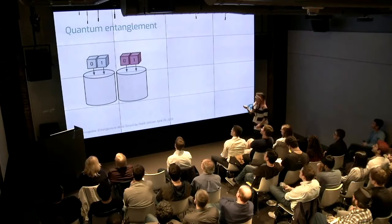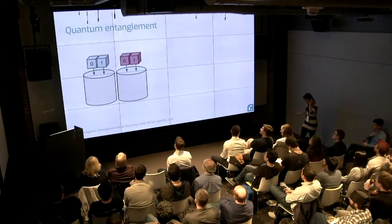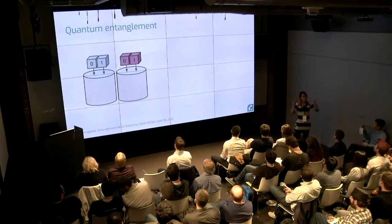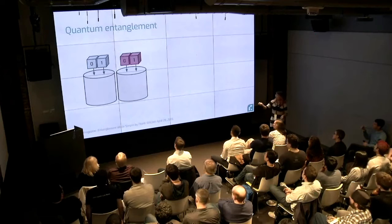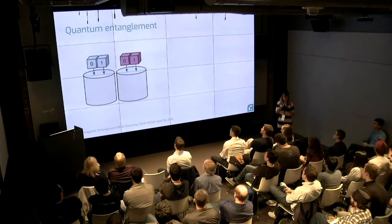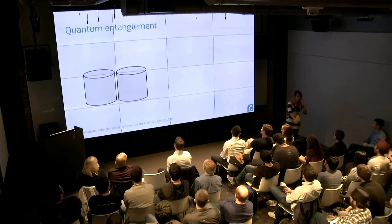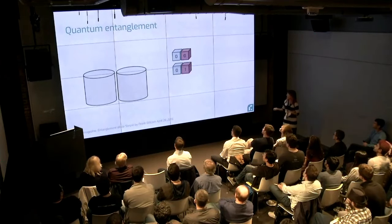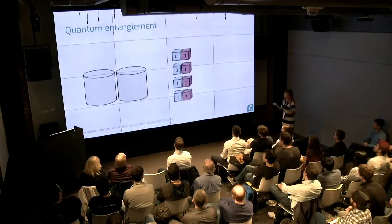Now I'm going to talk about quantum entanglement. Quantum entanglement is basically when you have two qubits and they have some interaction between them. Einstein called this 'spooky action at a distance.' I'll use an analogy: let's say I have two quantum boxes, and I put two cubes in every box — one says zero and one says one. I close the box and shake it. Then I blindly take one cube from the left box and one from the right. There are four possible outcomes: zero-zero, zero-one, one-zero, or one-one.